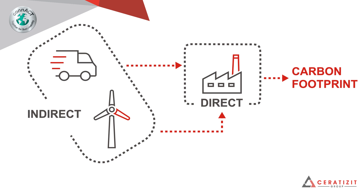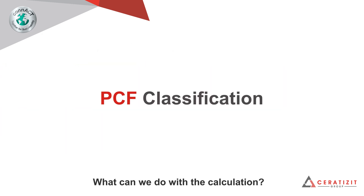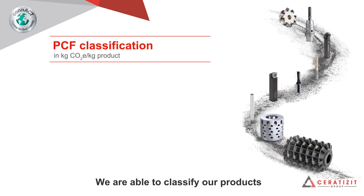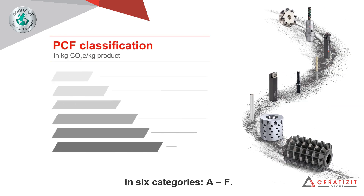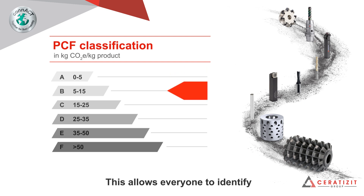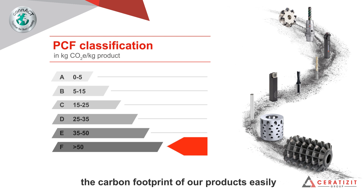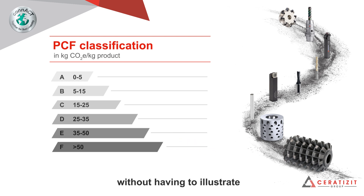What can we do with the calculation? We are able to classify our products in six categories, A to F. This allows everyone to identify the carbon footprint of our products easily, without having to illustrate the complex calculation process.